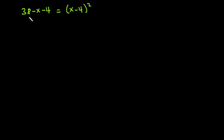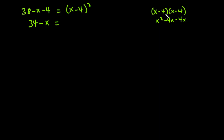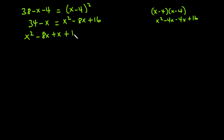Simplifying: 38 minus 4 is 34, so we have 34 minus x equals x minus 4, all squared. Expanding the right side: x minus 4 times x minus 4 gives x squared minus 4x minus 4x plus 16, which is x squared minus 8x plus 16. Transposing 34 minus x to the right-hand side gives x squared minus 8x plus x plus 16 minus 34, which simplifies to x squared minus 7x minus 18 equals 0.